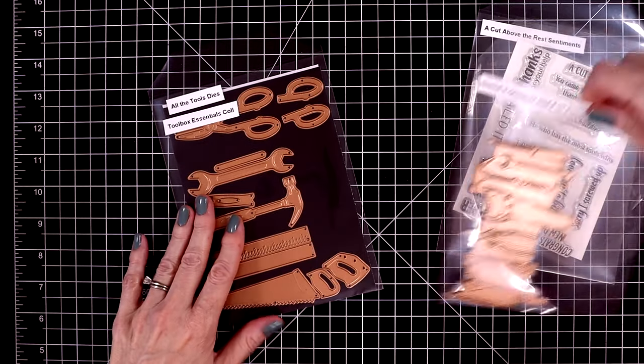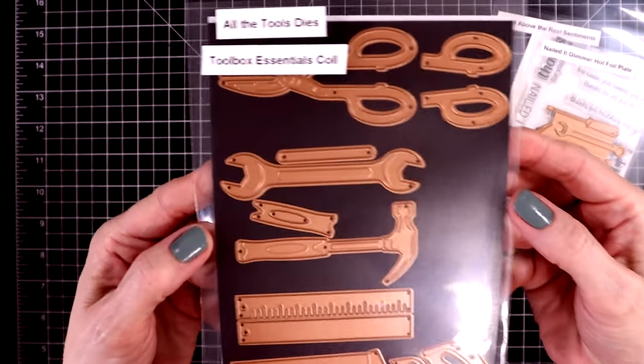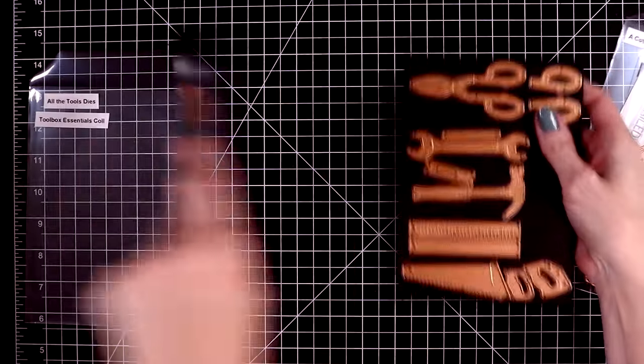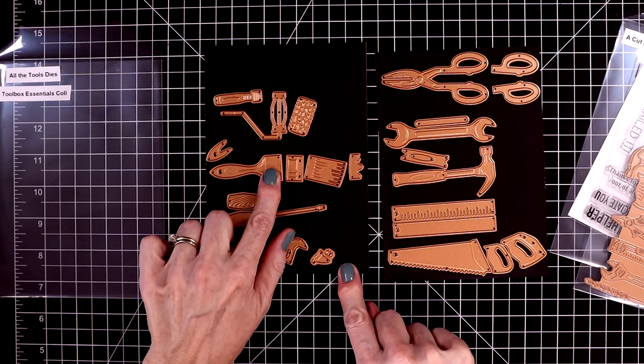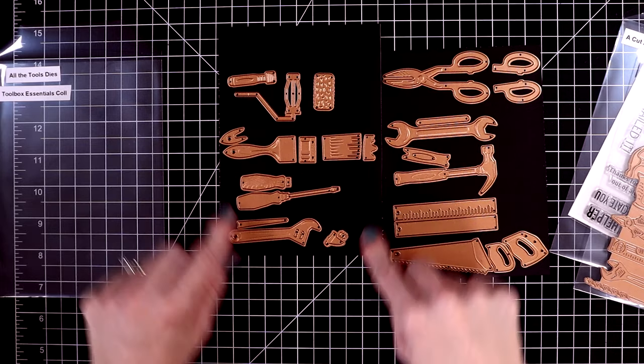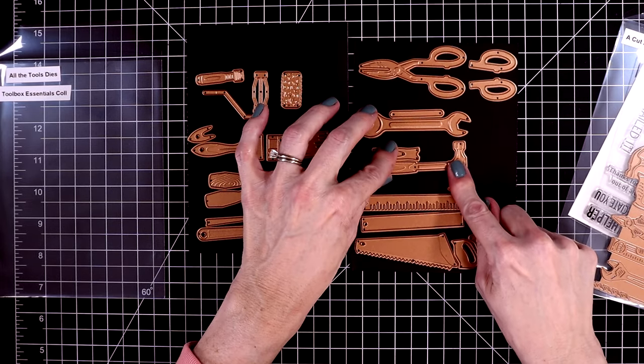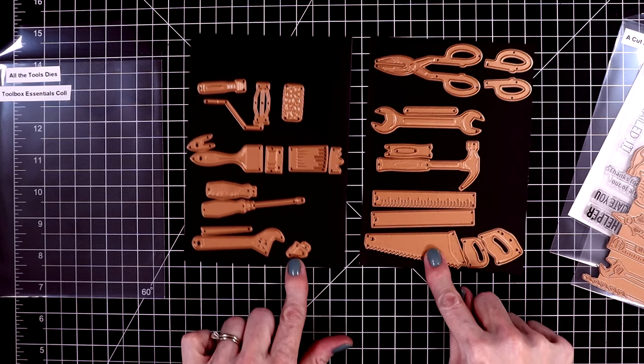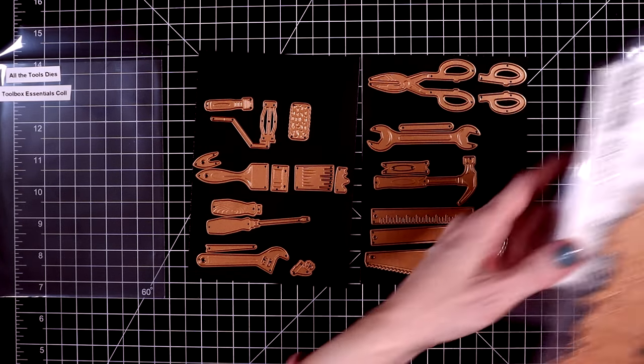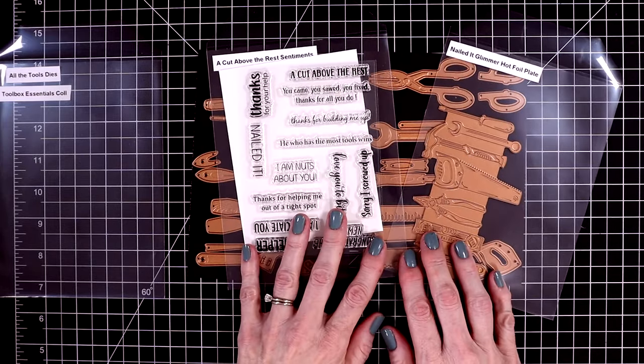And the last item I'm going to be creating with is a die cutting set called All the Tools. This is a layering die set with a lot included. This set was so popular that it has already sold out, but I'll leave the link in the description box so that you can click on the notify me when it's back in stock button. These dies create the cutest set of tools, and I'll show you all of these in just a moment.